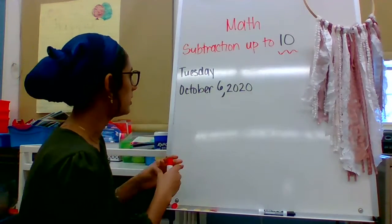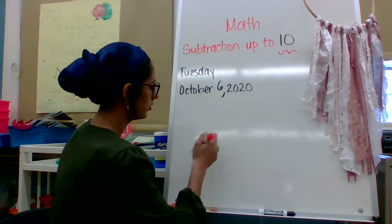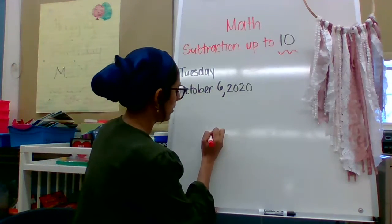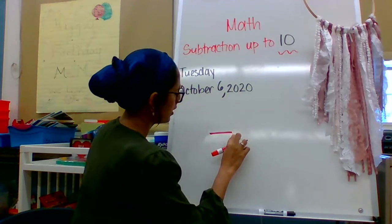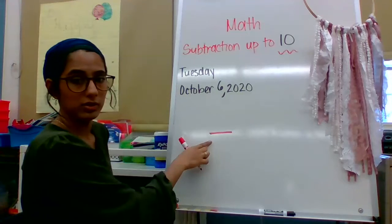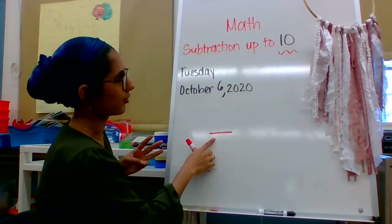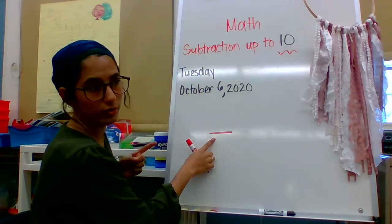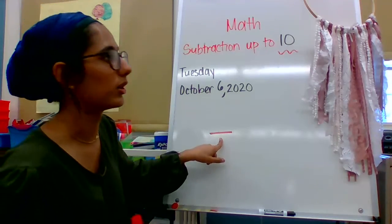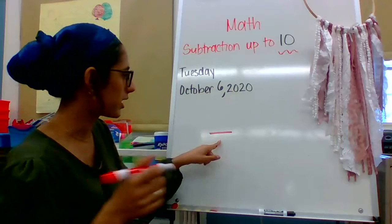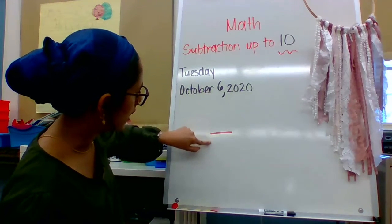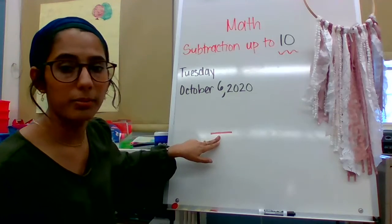Just as a recap and a refresher to remind you, let's go over a few things first. Who remembers? Just call it out. What is this called? I'm going to give you the answer in 3, 2, 1. If you said this is a minus sign or a subtraction symbol, give yourself a pat on the back because that is correct. So this, again, like we learned yesterday, is a minus sign.